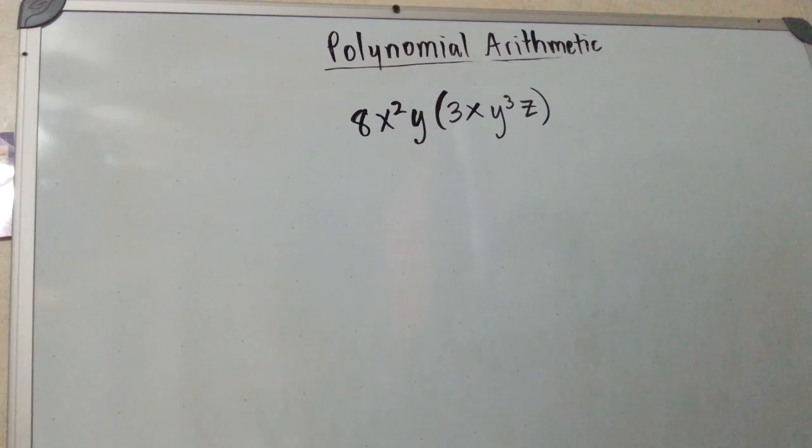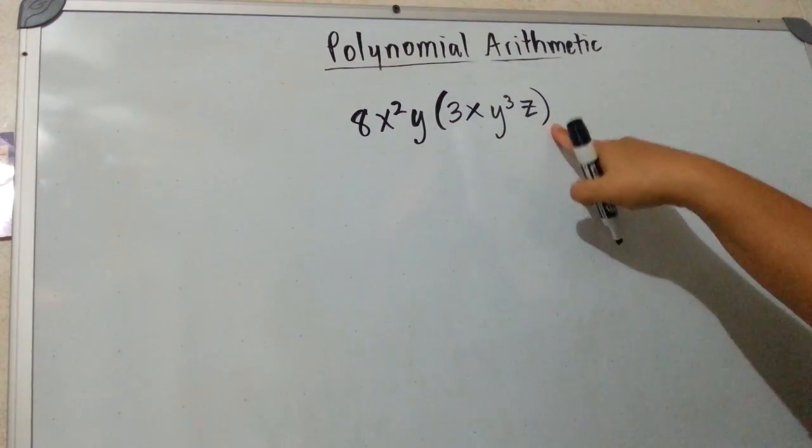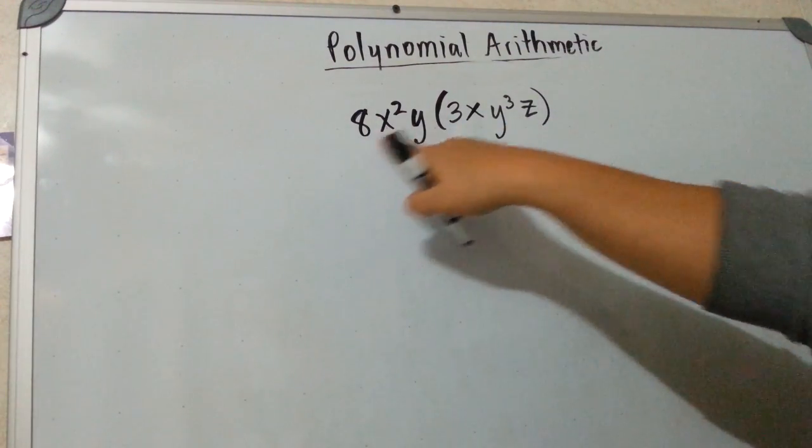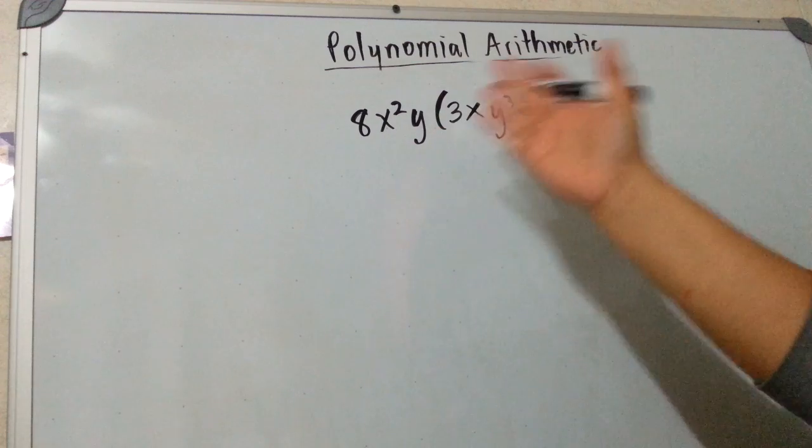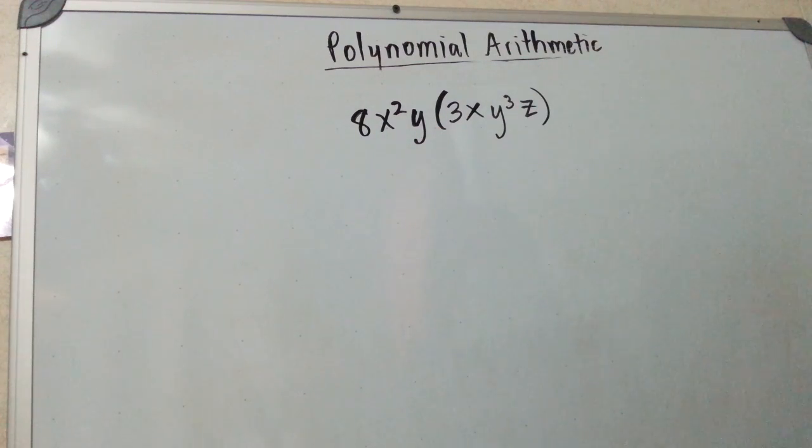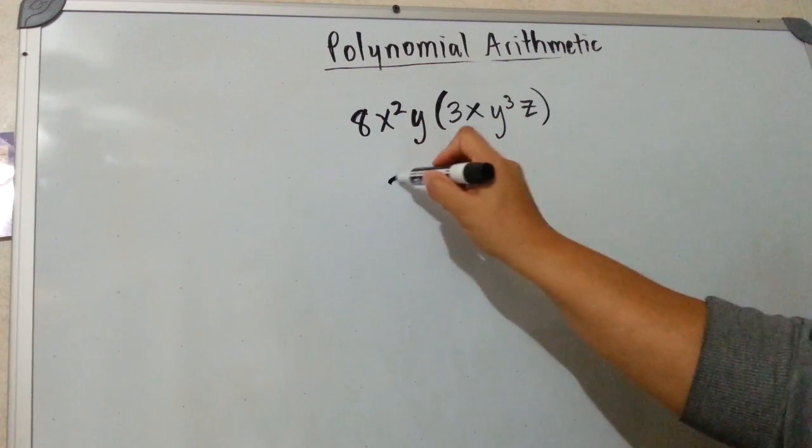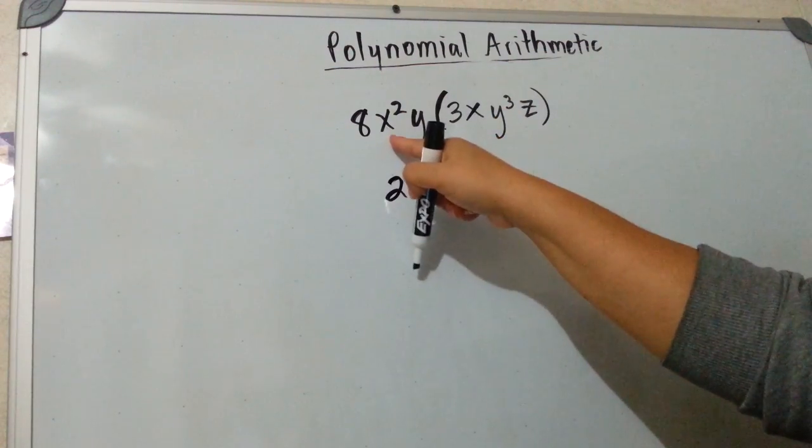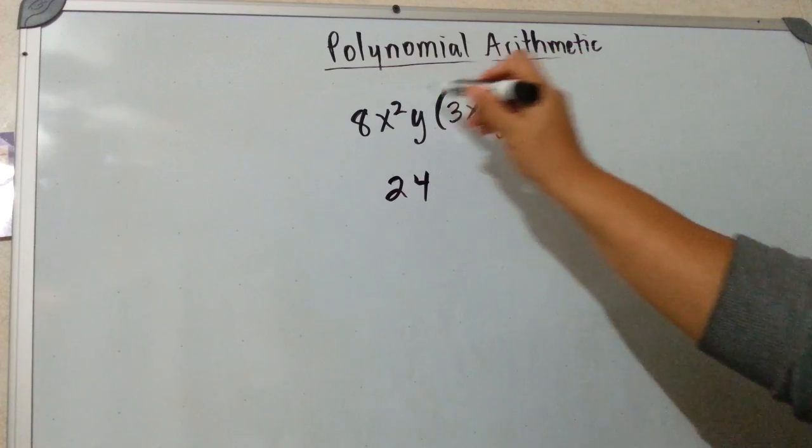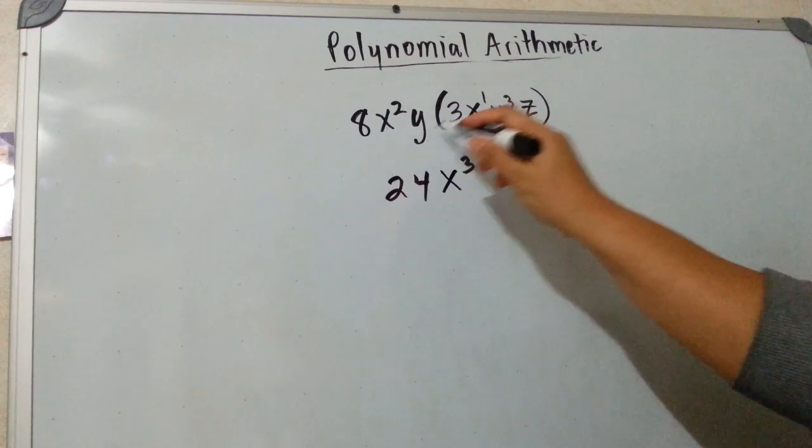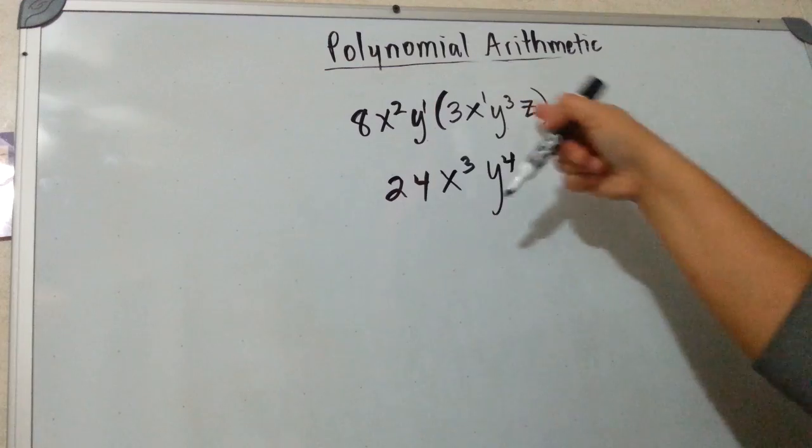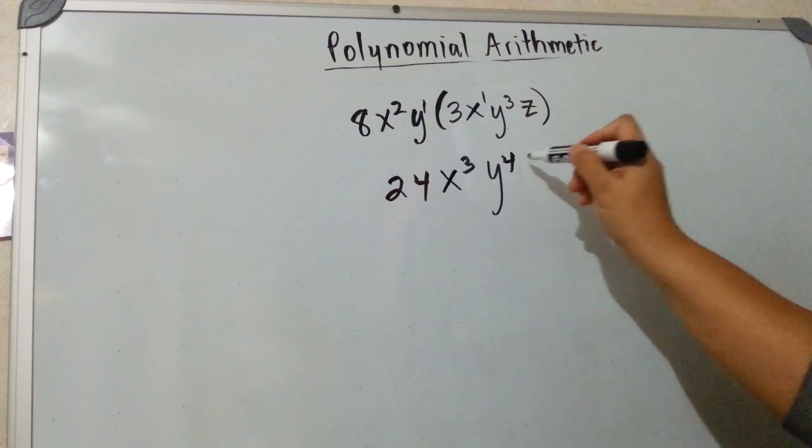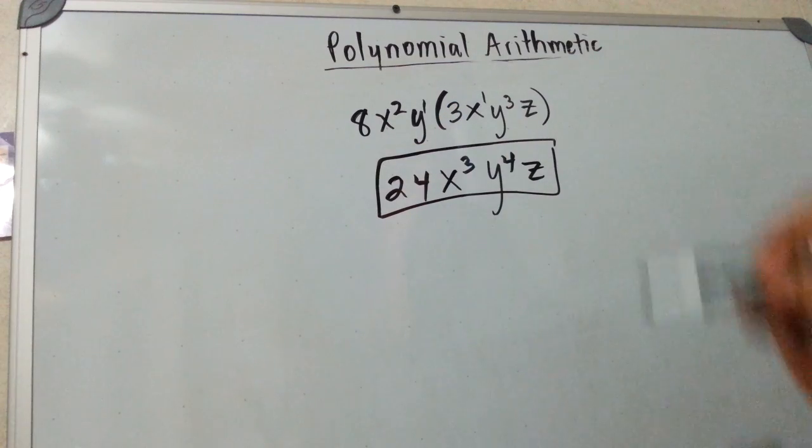This is an example of monomial multiplication. And the parenthesis implies that we're multiplying. And the fact that there's no plus or minus signs means we're multiplying everything. And you know when you multiply variables, you have to add the exponents. 8 times 3 is 24. x squared times x, well this is a 1, so 2 plus 1 is 3. You have 3 x's. y times y cubed is y to the 4th, because remember there's a 1, and that's a 3. You add them. And then z, there's no other z, so you only have one z. That would be your answer in this problem.